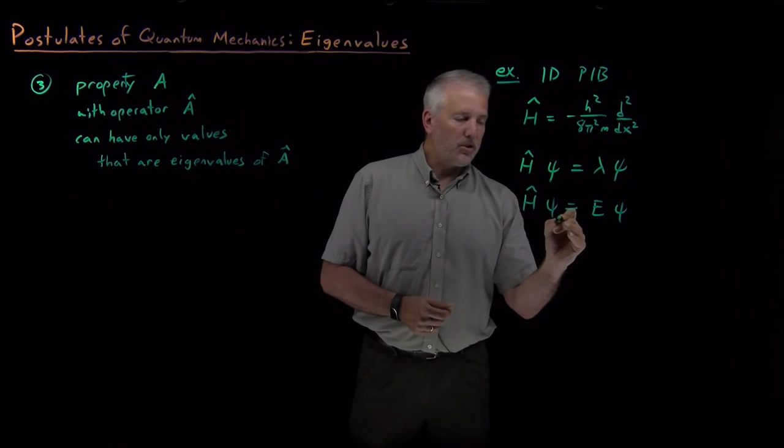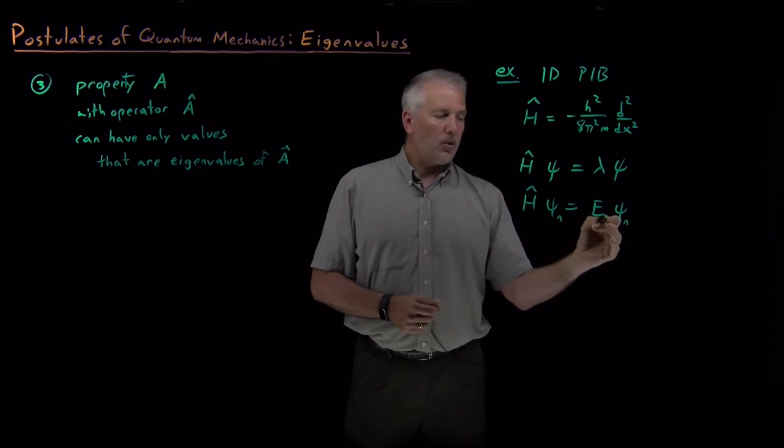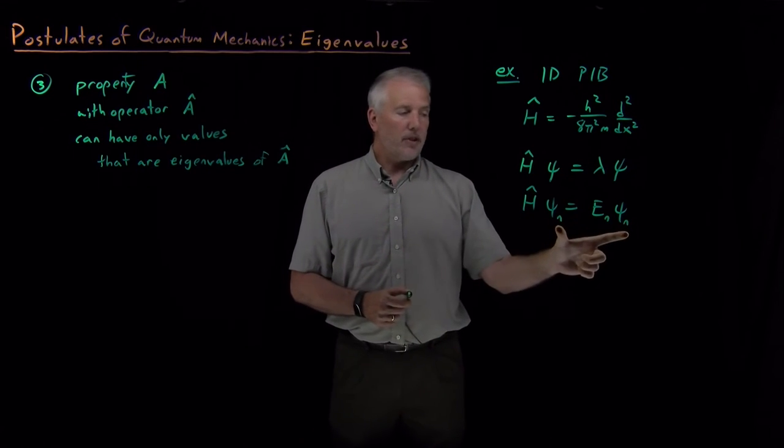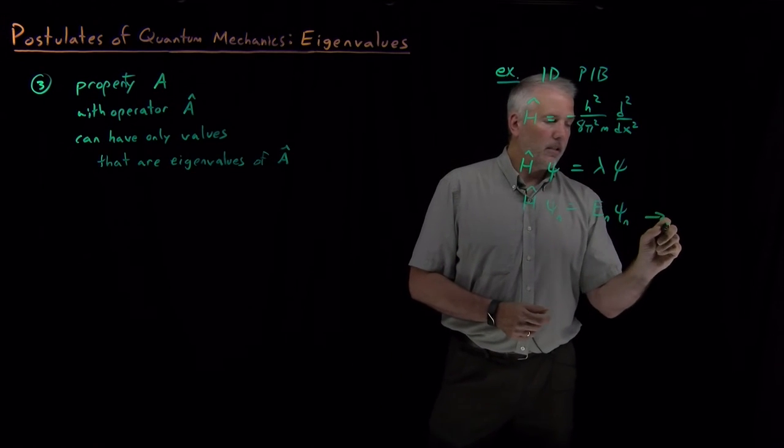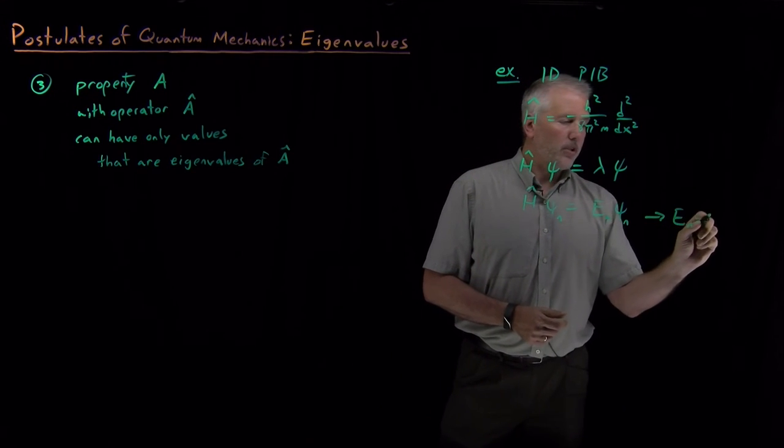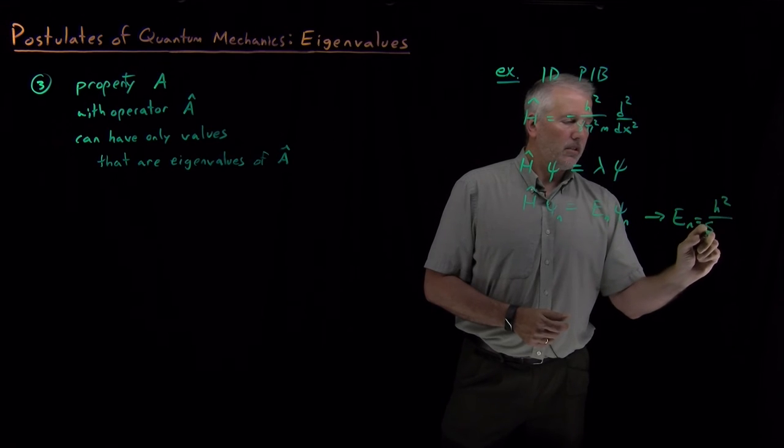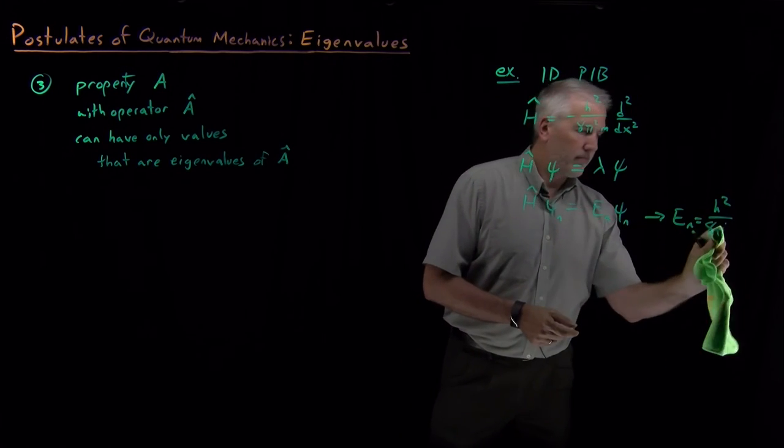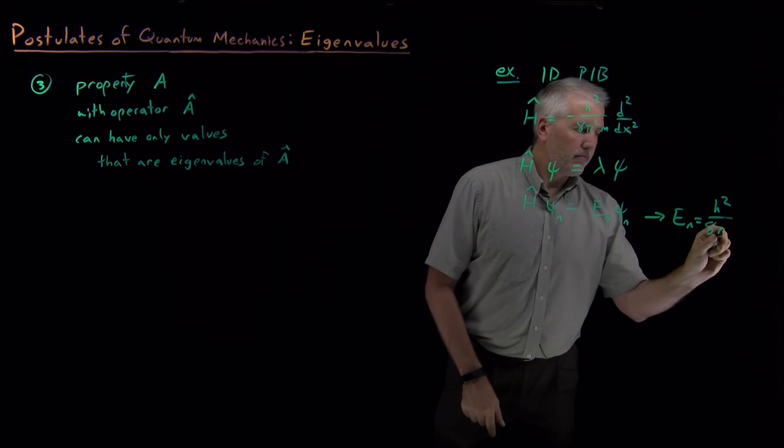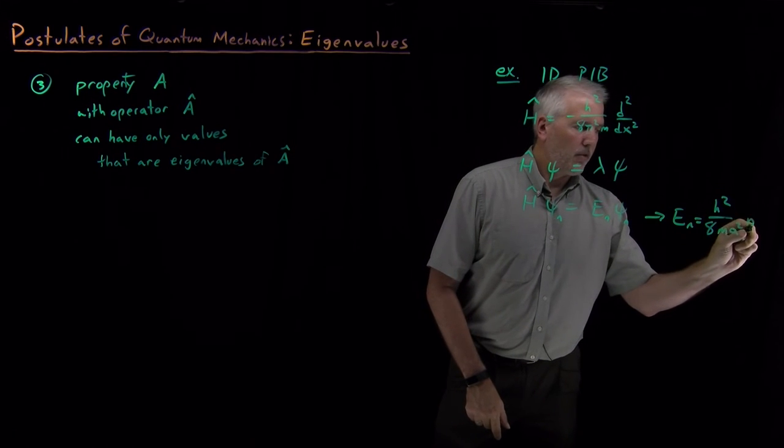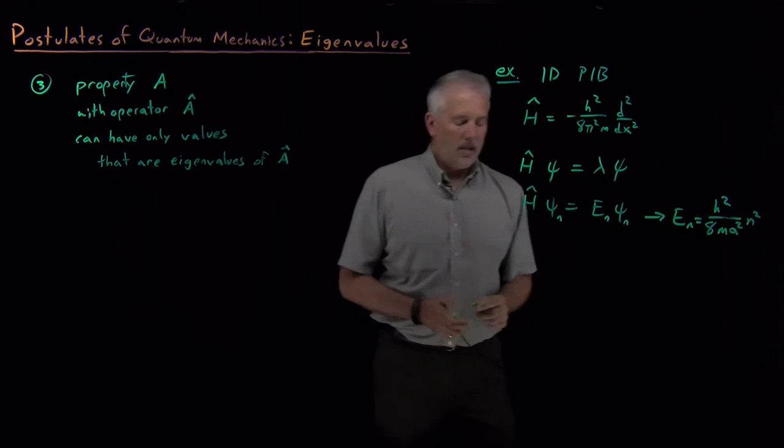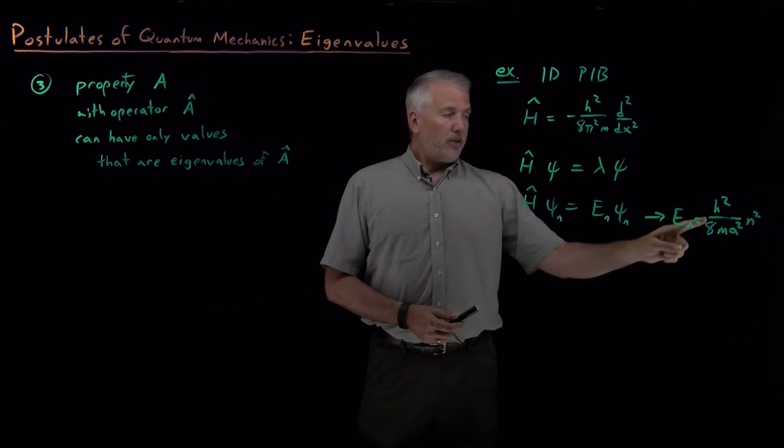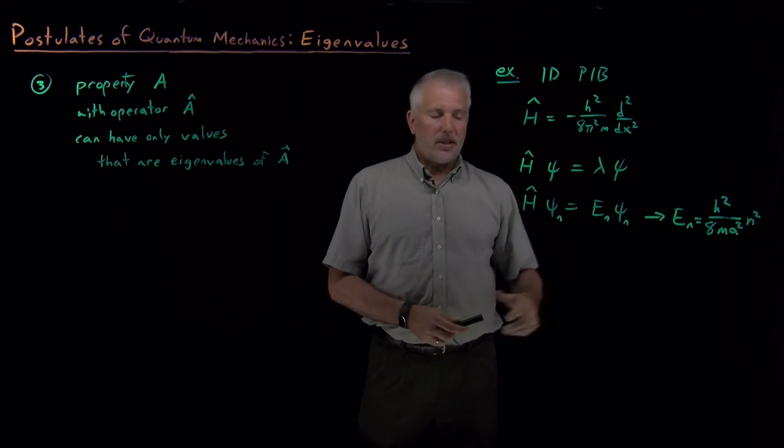Then there's certain solutions. When we solve the Schrödinger equation, the goal of that is to find the various different solutions for the eigenfunctions and the eigenvalues. And when we did that, what we found was for the particle in a box, the energies were these particular set of values, h squared over 8mA squared times n squared.